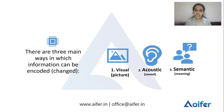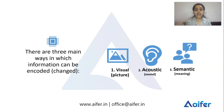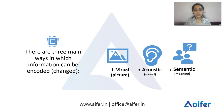There are three main ways to encode information. One is visual — information from our eyes, like pictures. Two is acoustic — which is from sound. Three is semantic — on the basis of meaning. These are the three main ways that we can encode information.